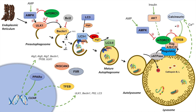So when these transcriptional repressors — ZKSCAN3 and FXR — are kicked out, we allow the transcriptional expression and induction of many autophagy genes. PPAR-alpha is very important in and of itself because it activates other ATG proteins and actually induces the expression of TFEB, which itself is a master regulator of many of these autophagy proteins.